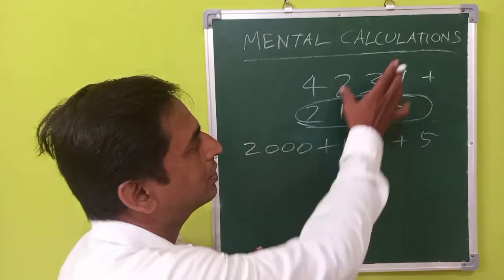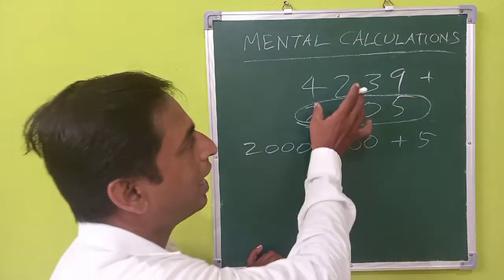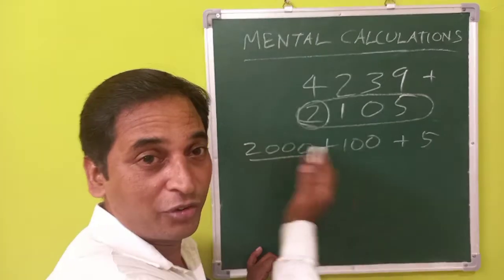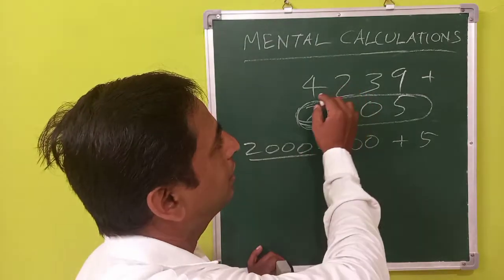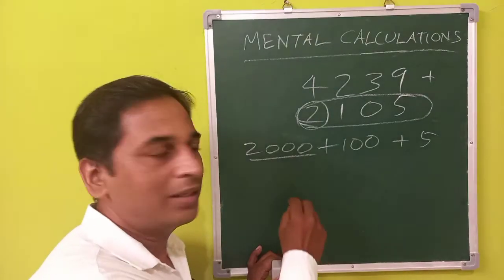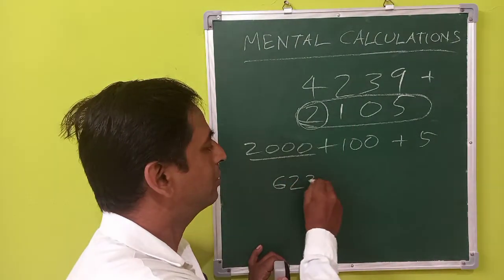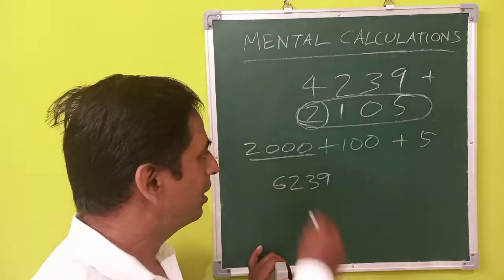Then you can just start adding the first number, that is you are adding the leftmost digit: 4239 plus 2000, you can add, make it, that is 6239.